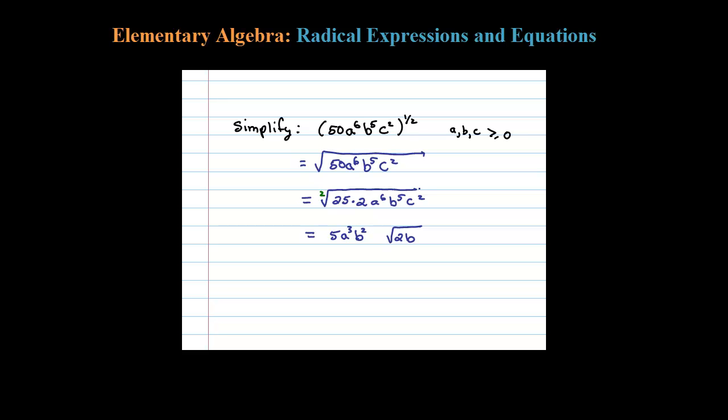And then finally, the square root of c squared is c. It's actually the absolute value of c, but again, all variables were positive. So here's our final answer: 5a cubed b squared c times the square root of 2b.